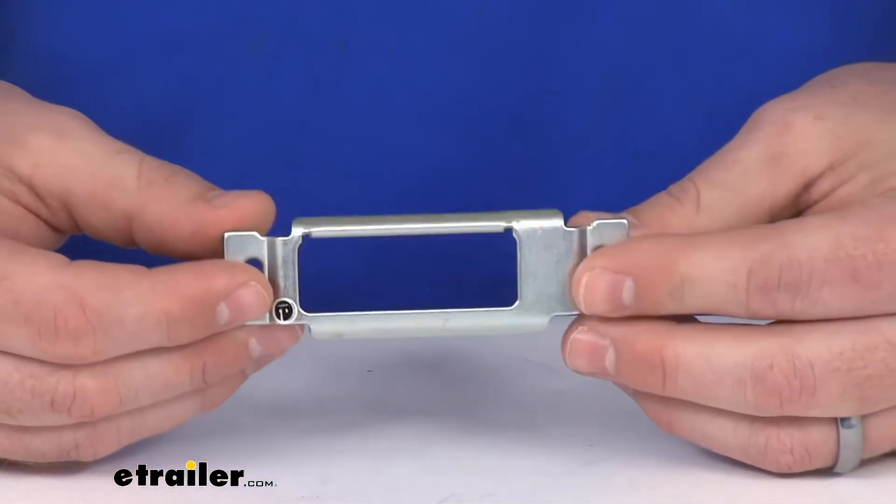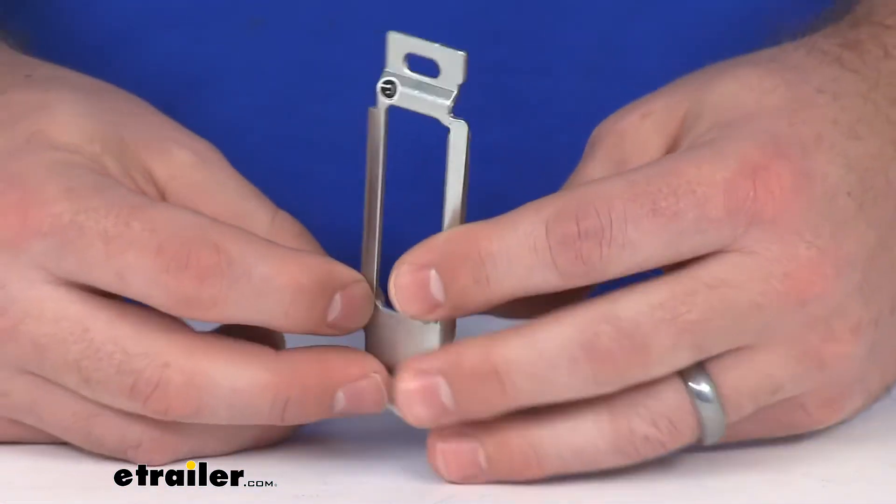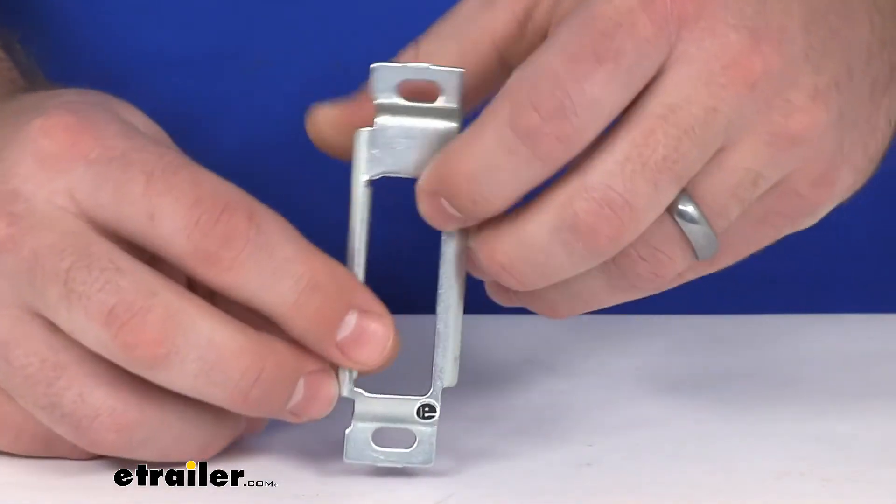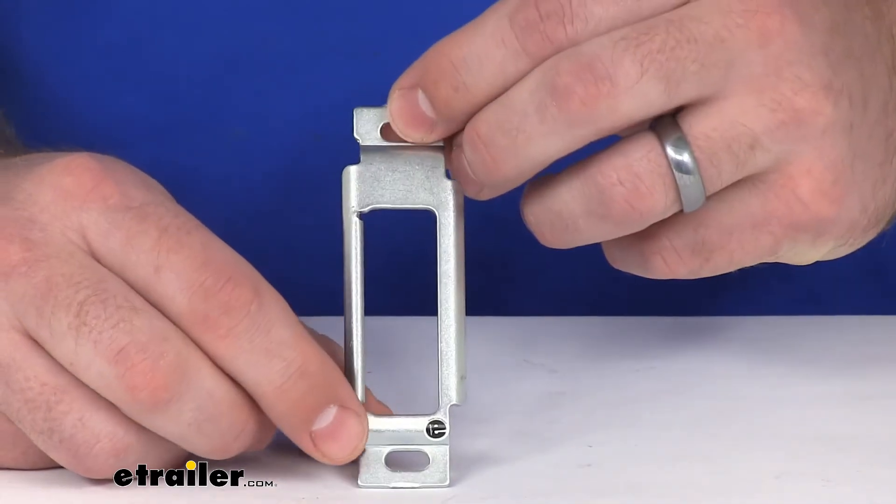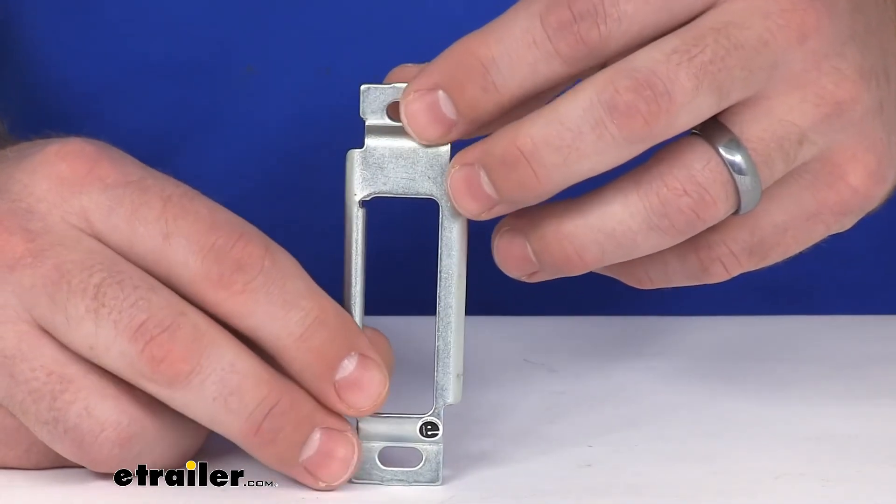This is a zinc plated steel construction, so it's going to resist corrosion, hold up well for you, and do a good job allowing you to have that complete set again for your RV door lock.